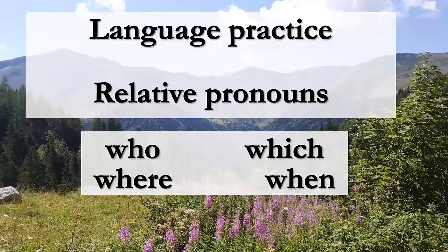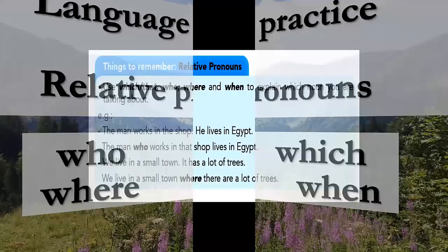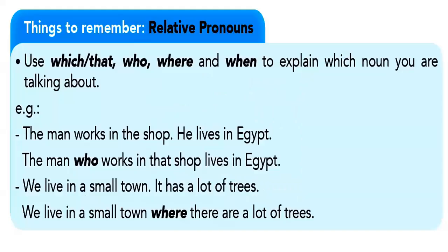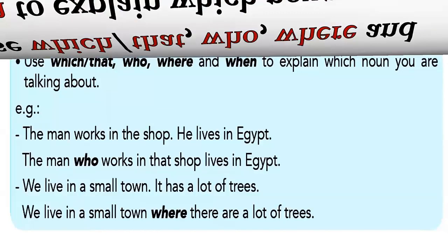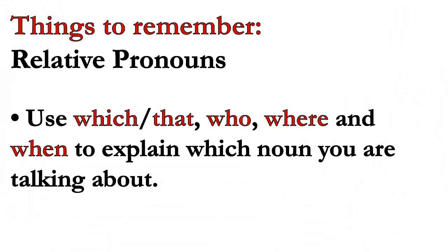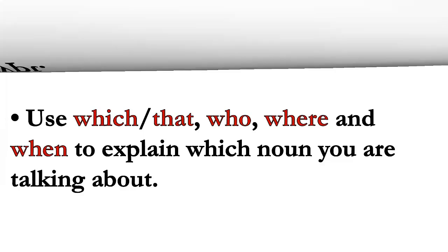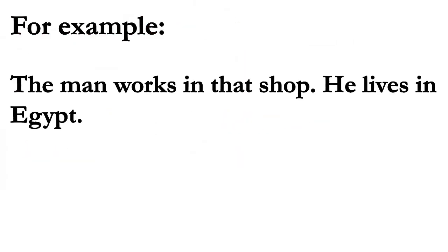Now with language practice: relative pronouns — who, where, which, and when. There are some important points to remember. We use which, that, who, where, and when to explain which noun you are talking about. For example: the man works in that shop, he lives in Egypt. We are talking about a person, so we use 'who.'